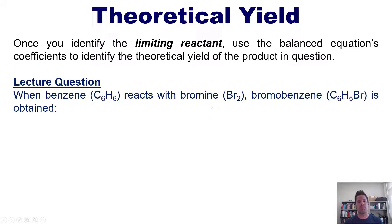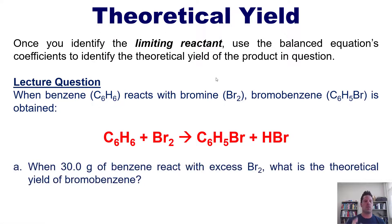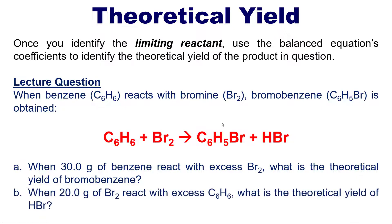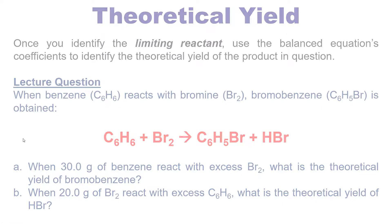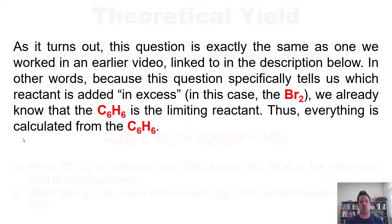When benzene, which has this formula, reacts with bromine, Br2, bromobenzene is obtained or formed according to this balanced equation. So here's our question. When 30 grams of benzene react with excess Br2, what is the theoretical yield of bromobenzene? And separately, as a question you can work on your own, when 20 grams of Br2 react with excess benzene, what's the theoretical yield of HBr? This question is actually exactly the same as one we worked in an earlier video, which is linked to in the description below. In other words, because this question specifically tells us which reactant is added in excess, in this case the Br2, we already know that the C6H6 benzene is the limiting reactant.